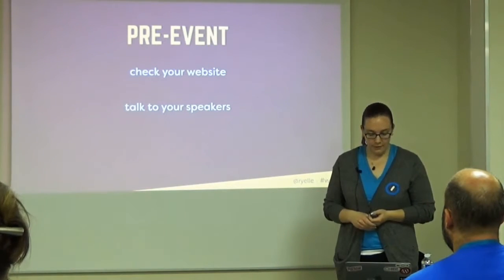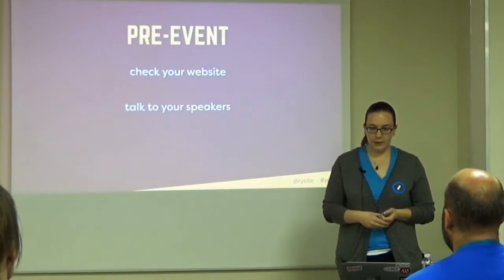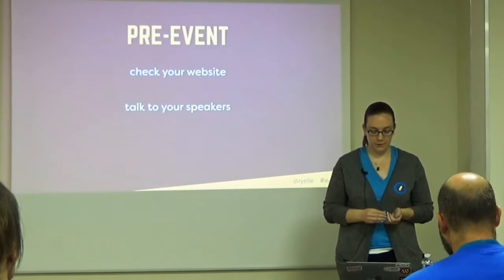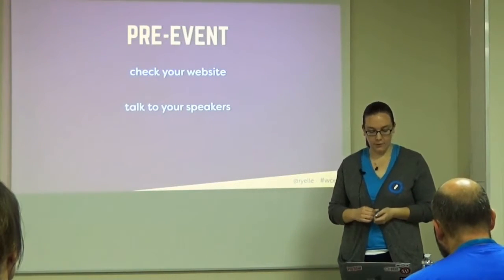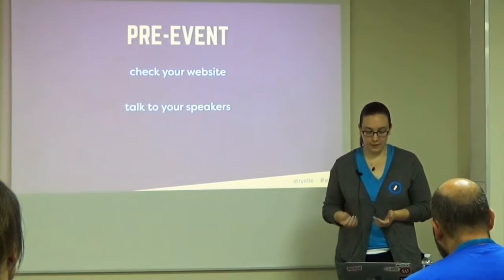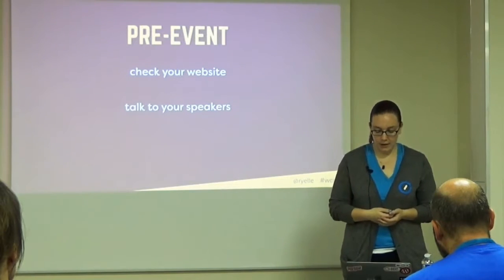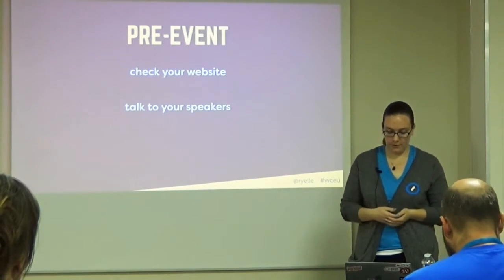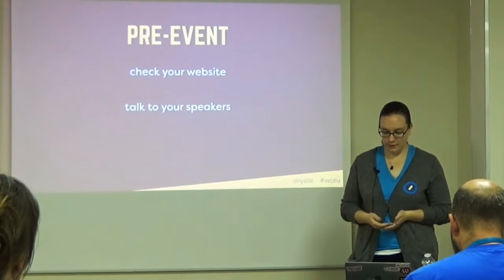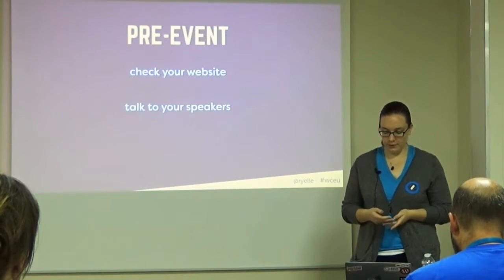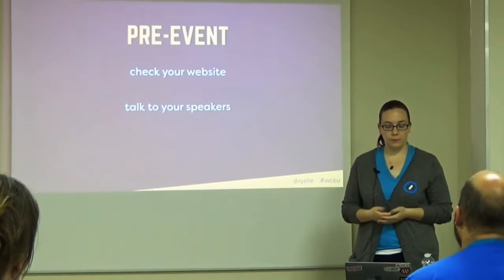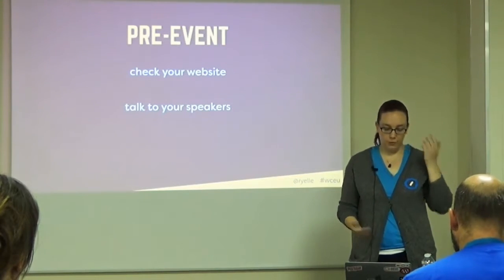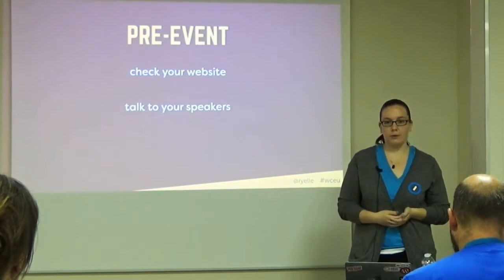After you've picked your speakers, check with them about any accommodations they might need. This might mean arranging an adjustable lectern, a table, or a ramp for your stage. You might need to arrange a sign language interpreter for their talk. If they've never given a talk before, describe the process, and then you both can work together to figure out if they need anything — which you should probably do with all your speakers.